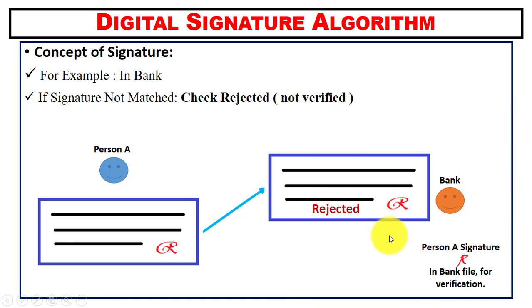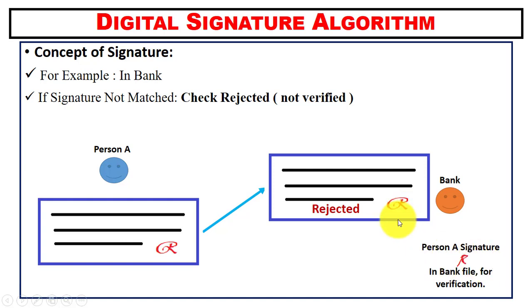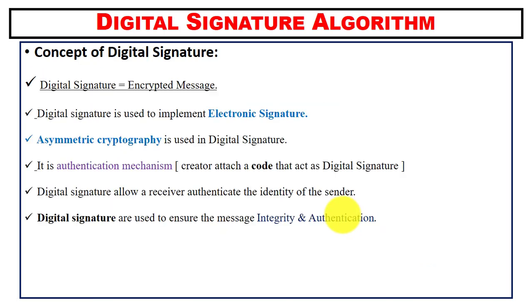Suppose we have a signature on the check and in the record we have another signature. In this case, the signatures do not match, so the check is rejected.